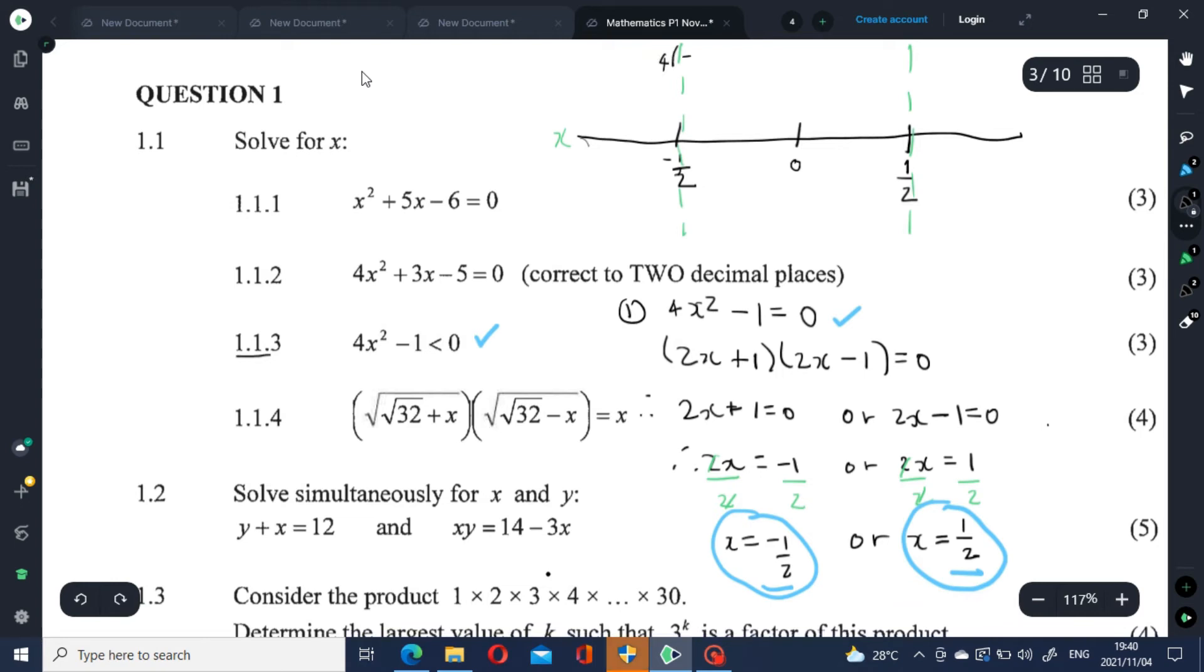Let's start with negative half and substitute negative half into the expression 4x squared minus 1 to see if it will give us a solution less than 0. Clearly, 1 minus 1 is 0 and 0 equals 0, not less than. Therefore, it doesn't satisfy the inequality.